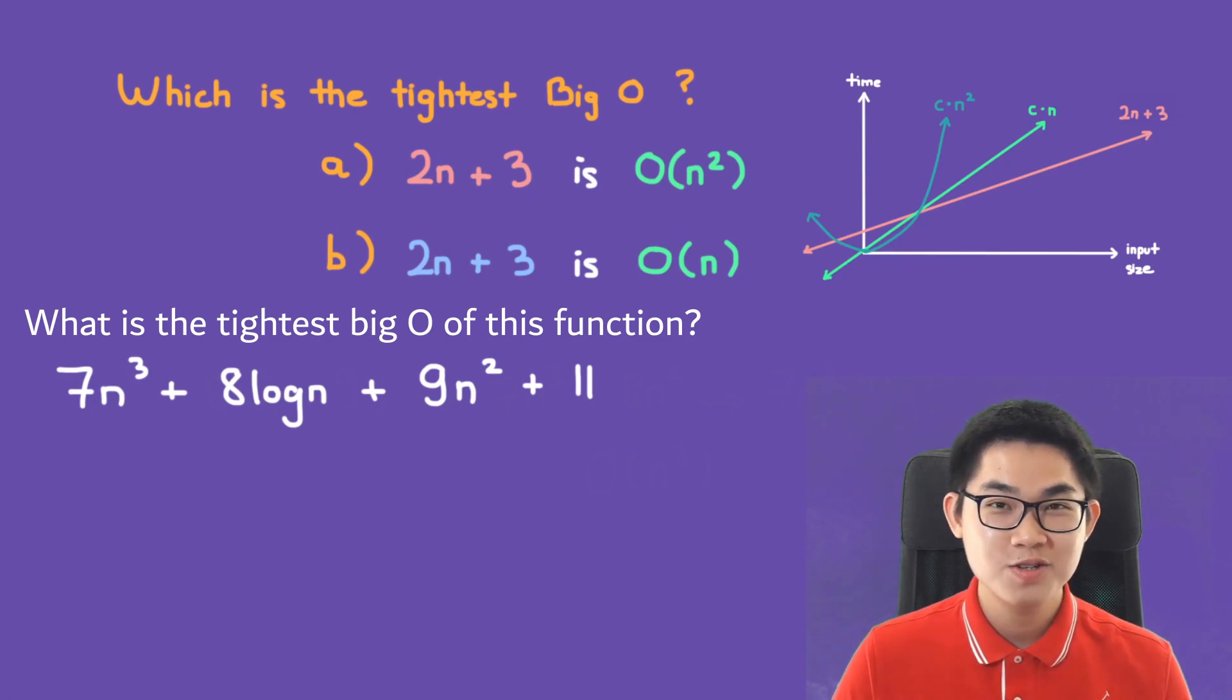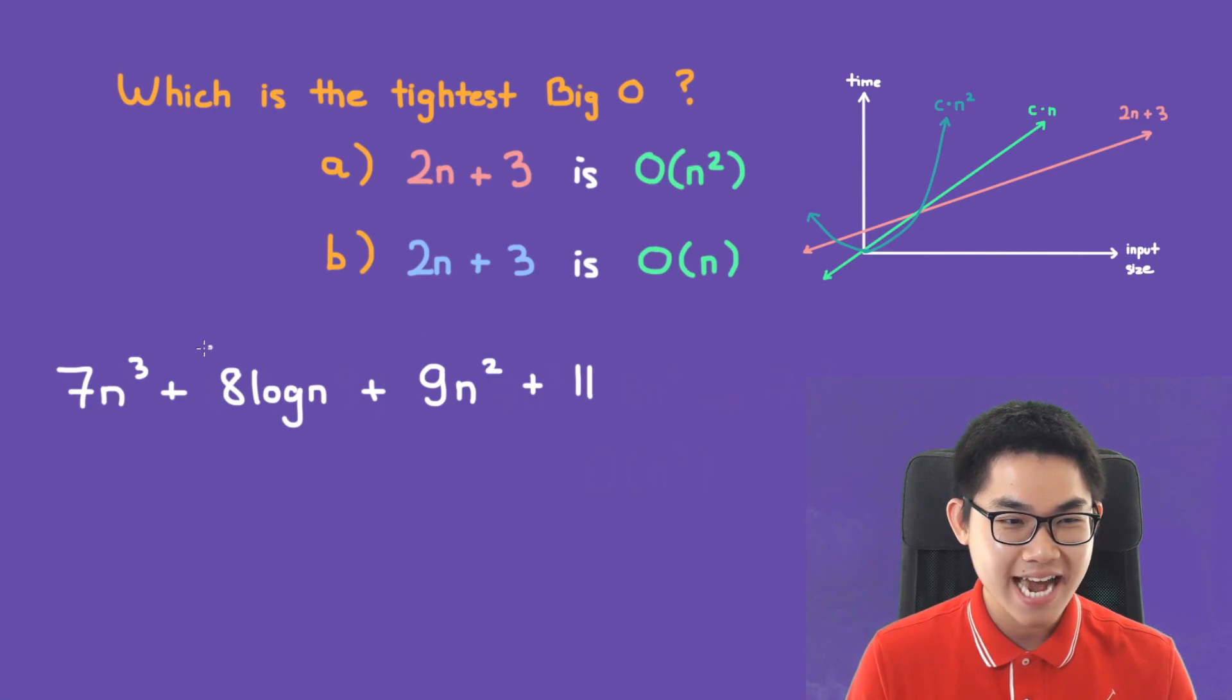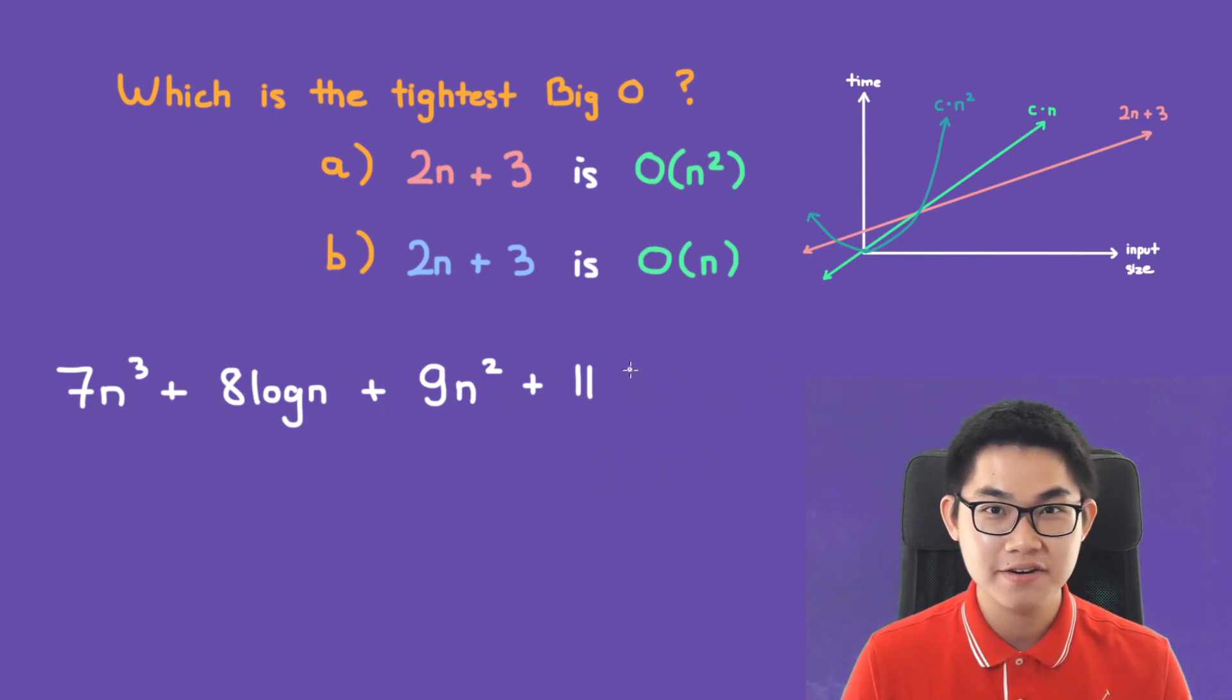I also want to show you the fast way to find the tightest big O of a function. So what is the tightest big O of this function here? Well, the first step is to get rid of constants. So you get rid of constants like these ones, like 11.